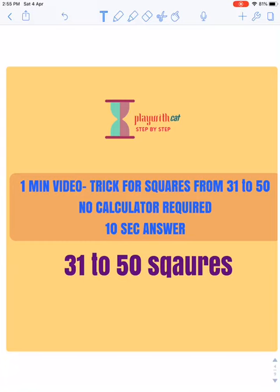Good morning friends. Today I will teach you a trick to mentally calculate squares from 31 to 50, no calculator required, and in 10 seconds you will get the answer. 31 to 50 squares.